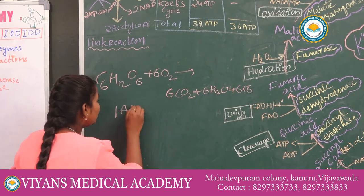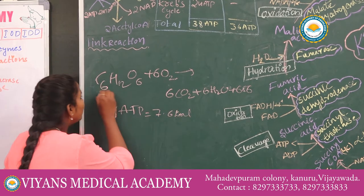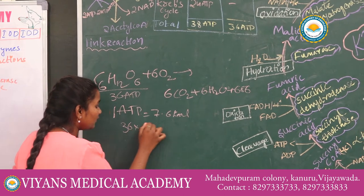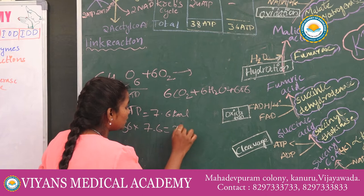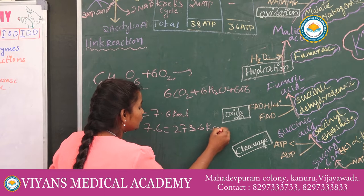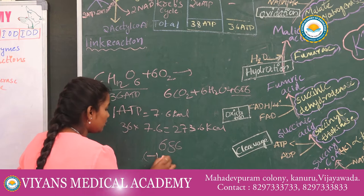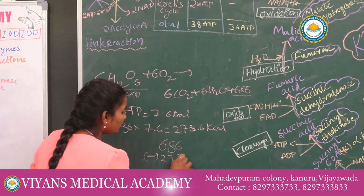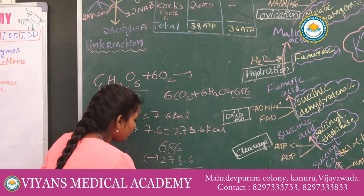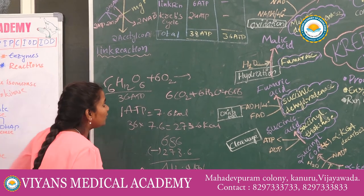Each ATP carries 7.6 kilocalories of energy. Glucose yields 36 ATP, so 36 × 7.6 = 273.6 kilocalories. The total energy from respiration is 686 kilocalories, and subtracting 273.6, the heat energy released is 412.4 kilocalories. This energy is used by the plants.